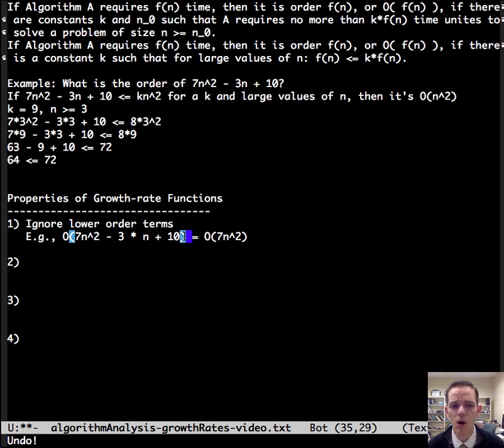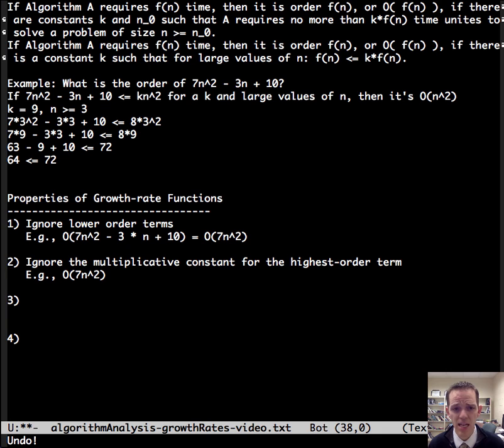Well, if we can ignore the lower order terms, the lower order terms are going to be the N and the constant here. So we could equivalently write that as it's the order of seven N squared. And because it's going to grow, they're going to grow about the same for large values of N. This does not contribute substantially to the overall execution or the overall value of the function. So we can ignore lower order terms. We can also ignore the multiplicative constant for the highest order term. And we're only left with highest order terms here because we've ignored all the rest.